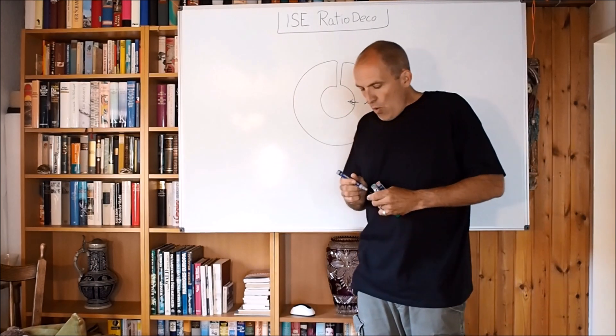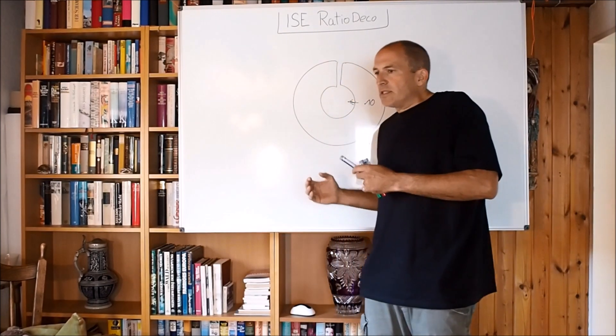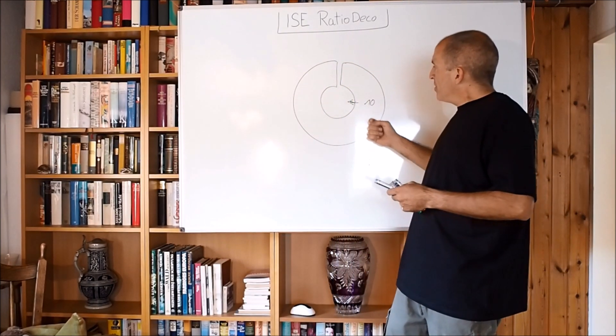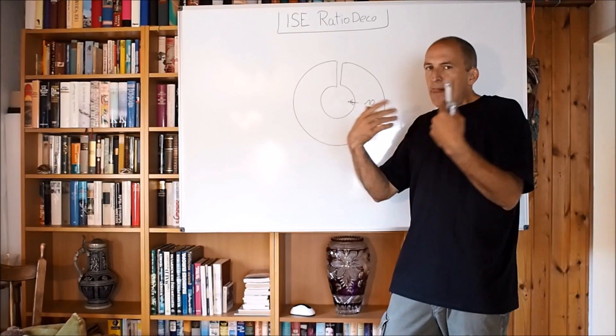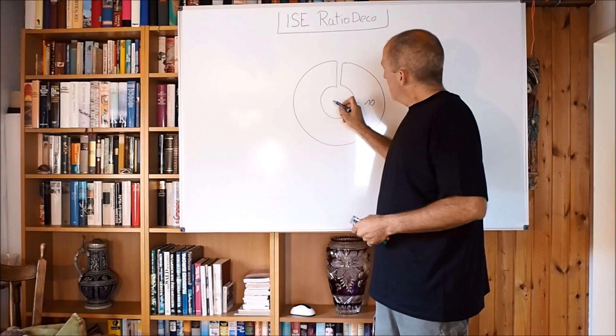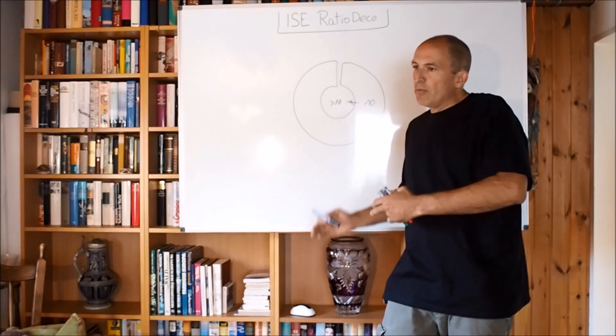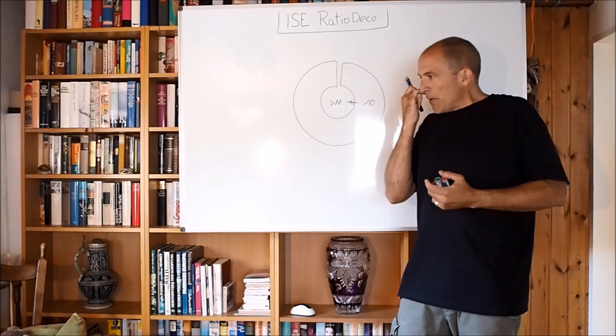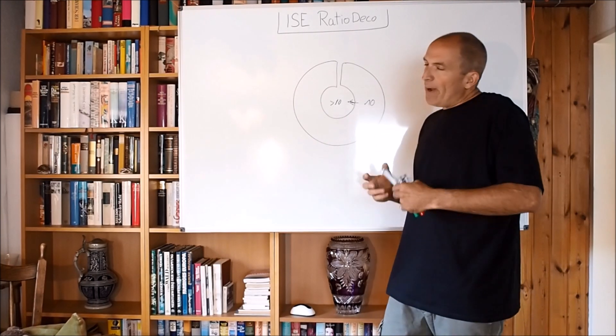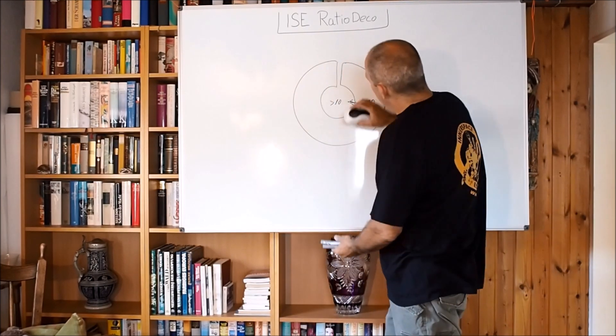So the question is when does this off-gassing start, when does gas start to travel from the tissues back in the lungs and we bring it back out of the system? So basically the moment we are below 10 here, so basically the moment we start to go back up.